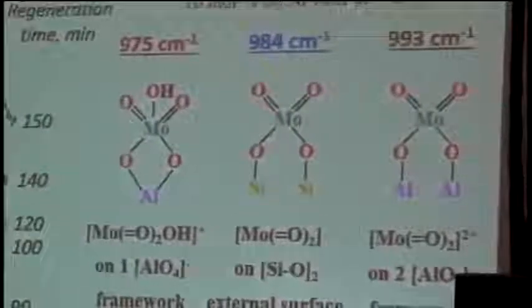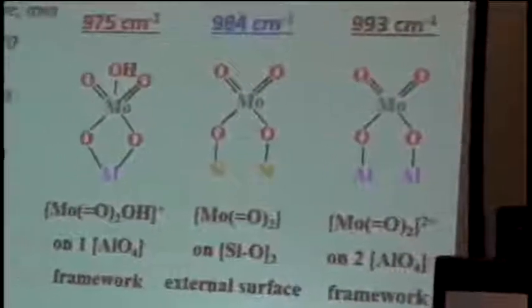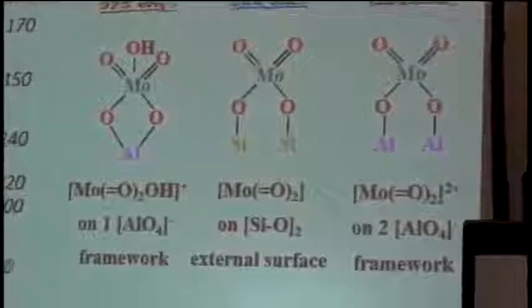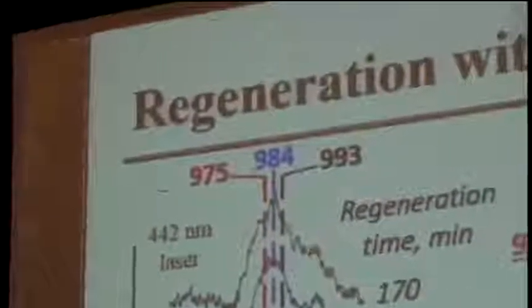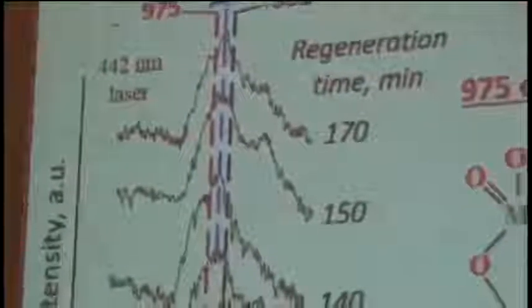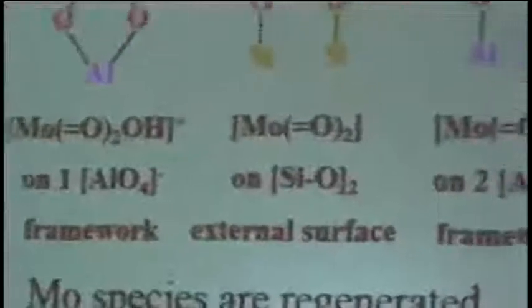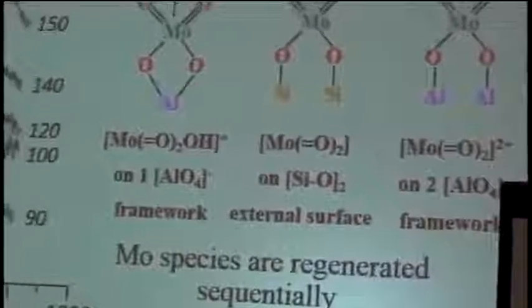So if we continue, the trend continues, and more and more of the molybdenum species, we force them to be on the external sites, on silica external sites. So we are regenerating them sequentially with exactly the same sequence as the deposition of molybdenum for the fresh catalyst.